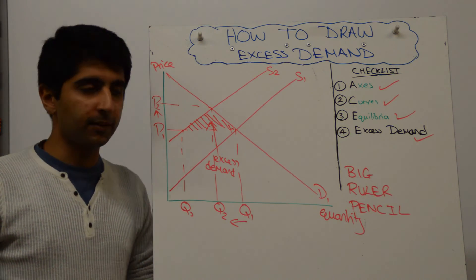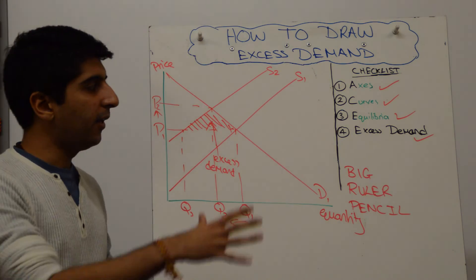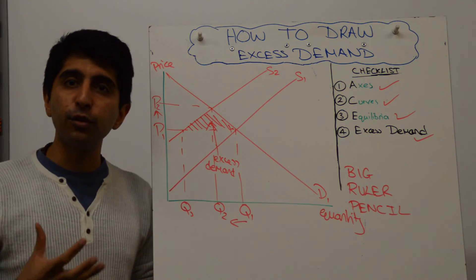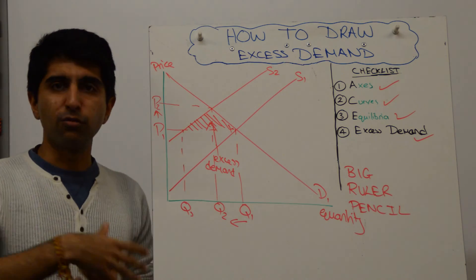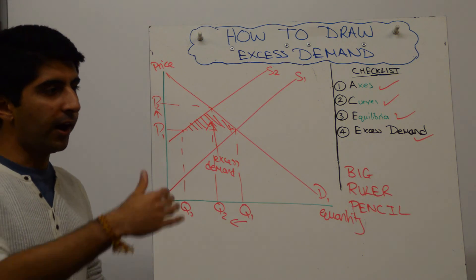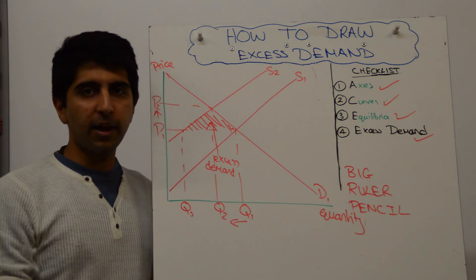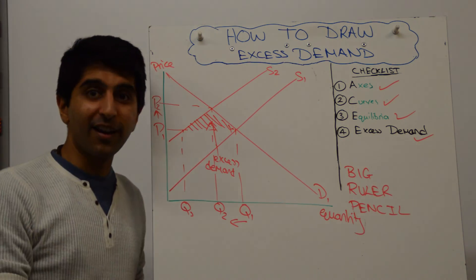So two ways of showing excess demand. Remember that maximum price is a separate concept. This is how excess demand may occur through the price mechanism and then rectified through the price mechanism. Either by demand shifting to the right or supply shifting to the left. Thanks for watching, guys. See you next time.